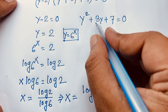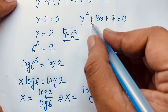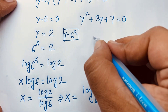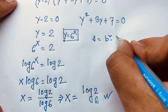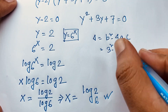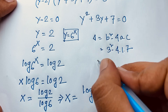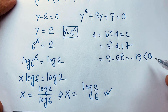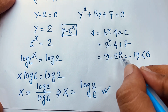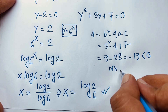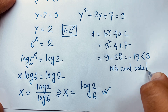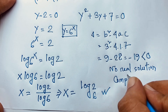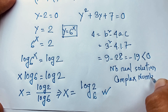For the other case, y squared plus 3y plus 7 equals 0. We check the discriminant: delta equals b squared minus 4ac equals 3 squared minus 4 times 1 times 7 equals 9 minus 28 equals negative 19, which is less than 0. So there is no real solution here — only complex solutions. Since we need a real solution, this case is rejected.